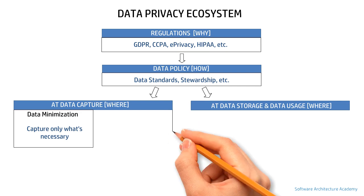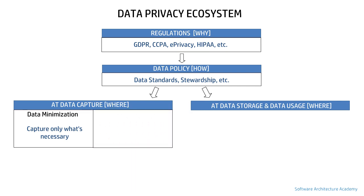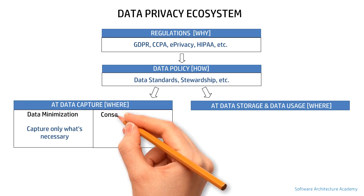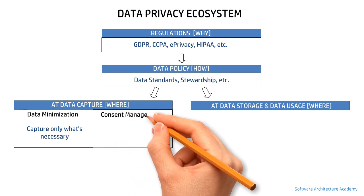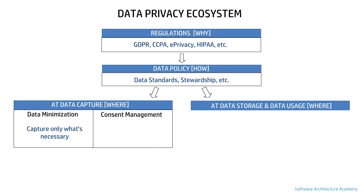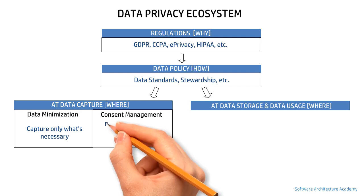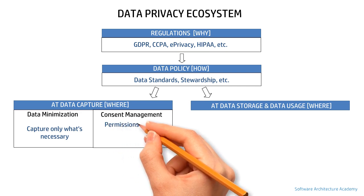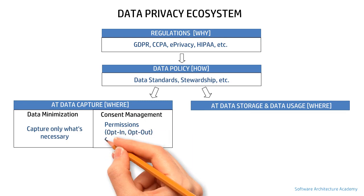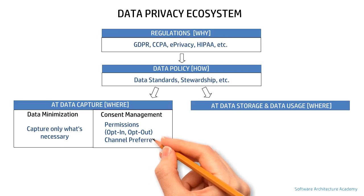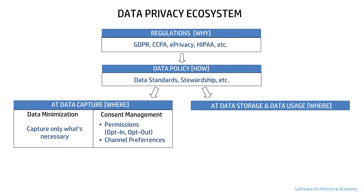The next concept during the data capture phase, which can also span other phases, is consent management. This process captures an individual's willingness to receive communications from an organization. This willingness is called permissions and can be either to receive or not receive communications — that is, opt-in or opt-out. It also deals with the mode by which the individual chooses to receive or not receive communication, such as email, SMS, WhatsApp, or voice calls. This part is called preferences.